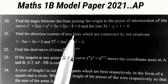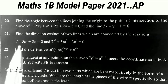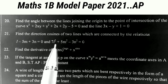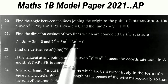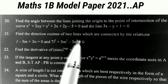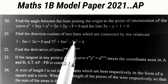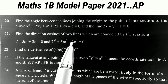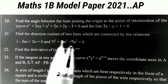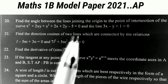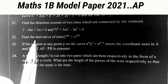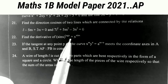The next one: find the direction cosines of two lines which are connected by the relations l - 5m + 3n = 0 and 7l² + 5m² - 3n² = 0. This is the problem from direction cosines and direction ratios. In the topic of DCs and DRs we have only two important problems, and a guaranteed one sum comes in the examination from those two problems.